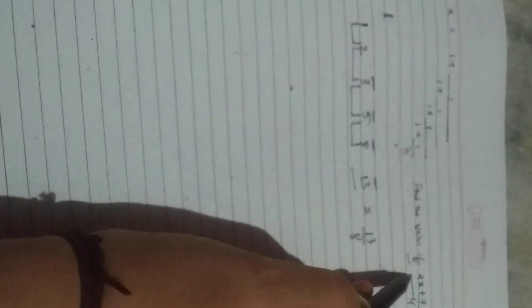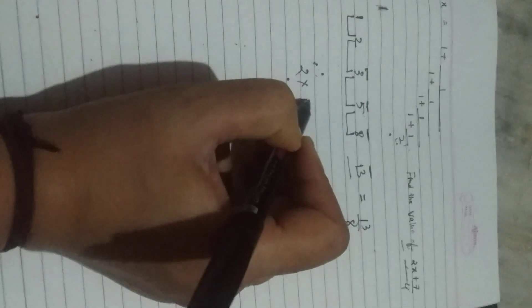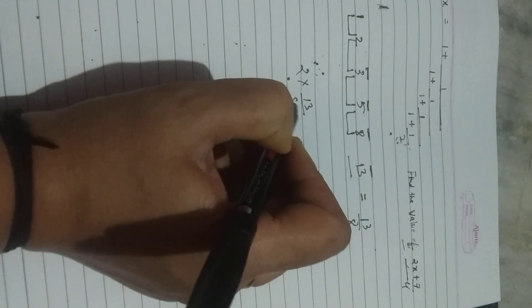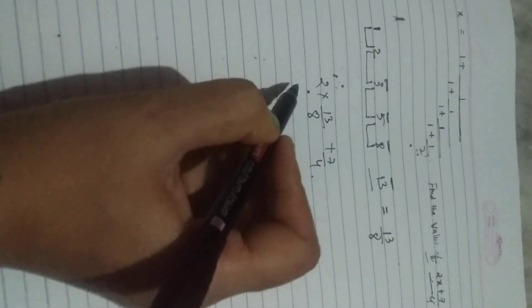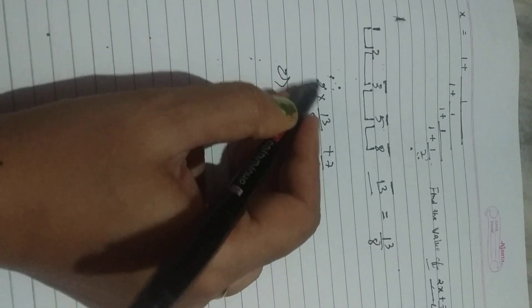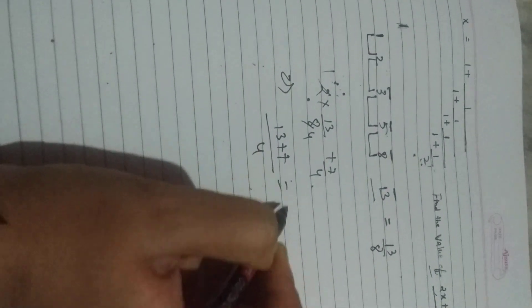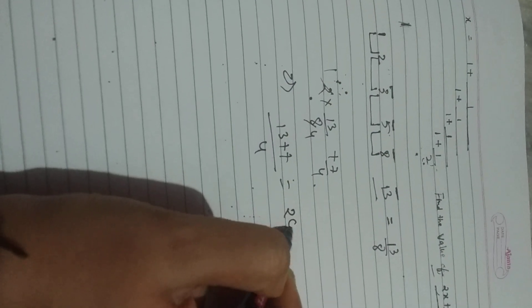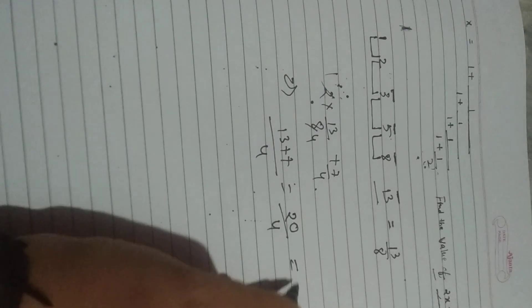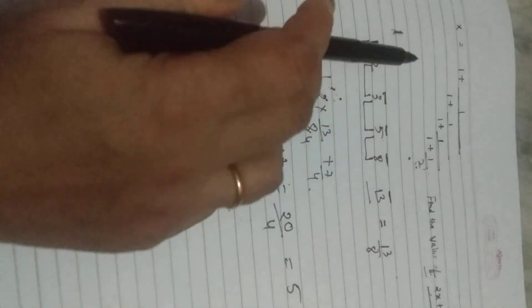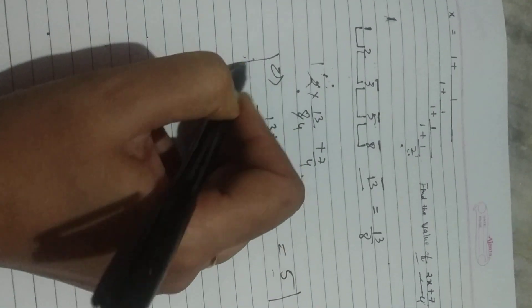So just put the x value here: 2 times 13/8 plus 7/4. Now it is very simple. Simply multiply to get 26/8, then add 7/4, so 13/4 plus 7/4 equals 20/4, which equals 5. So the answer for this solution is 5. This is the answer, very simple.